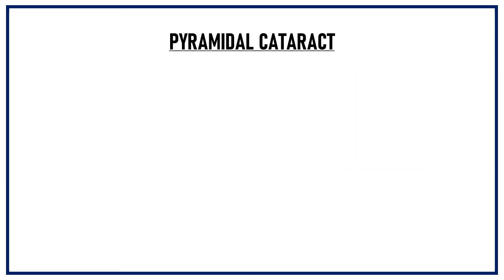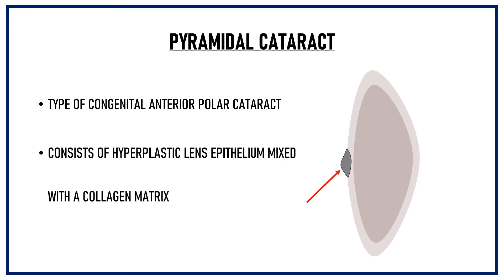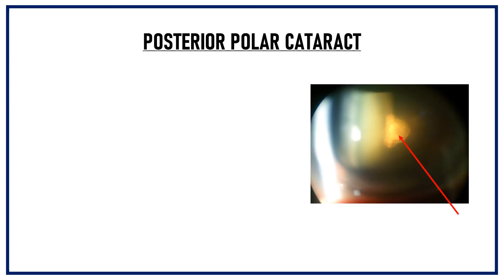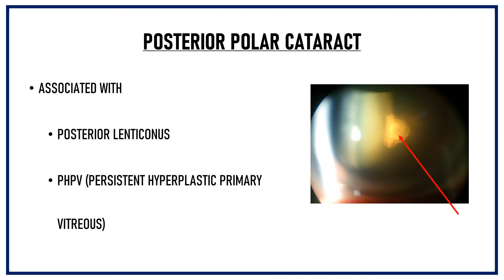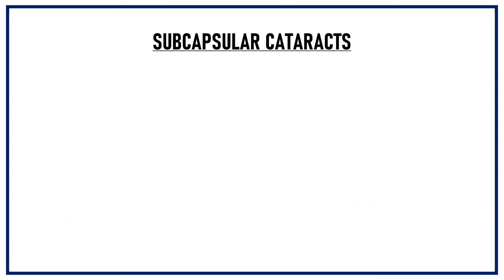Pyramidal cataract is a type of congenital anterior polar cataract. It looks like a conical opacity that projects into the anterior chamber from the anterior capsule of the lens. It consists of hyperplastic lens epithelium mixed with a collagen matrix and it can lead to amblyopia. Posterior polar cataract can sometimes be associated with posterior lenticonus or PHPV — persistent hyperplastic primary vitreous — in which condition the hyaloid vessels fail to regress by birth.